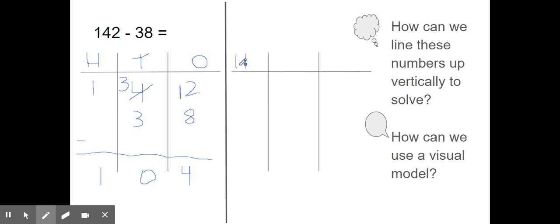I'm going to use 100 squares, 10 sticks, and ones. 142. There's 100, 4 tens, and 2 ones. Should I also model 38? No, I shouldn't. I'm taking away 38. I'm not adding 38, so I will not model 38.